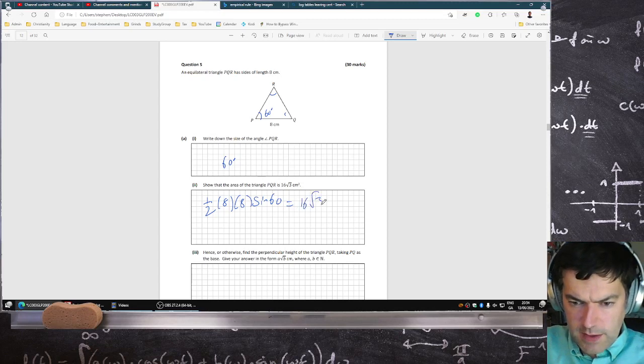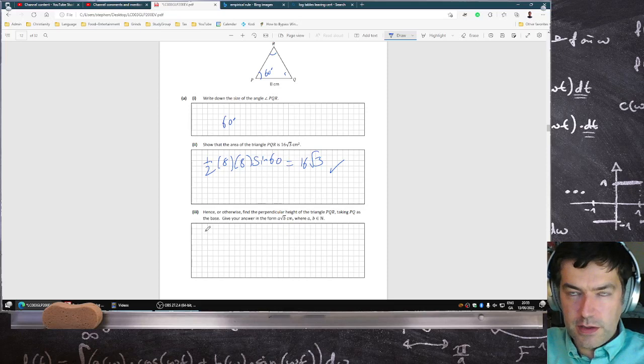That's 16 root 3, yep that checks out. Find the perpendicular height. So the formula for the height you can get it from the area formula: a half the base by the height is equal to the area.